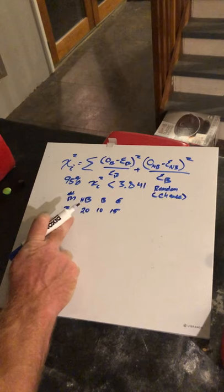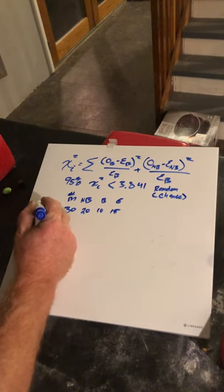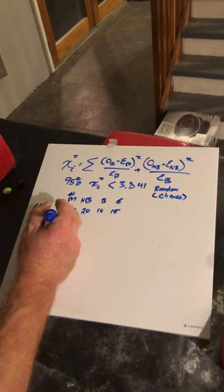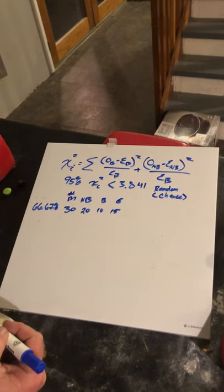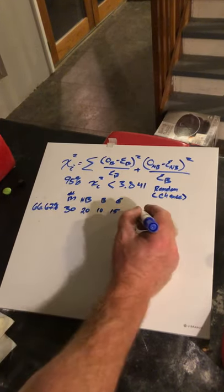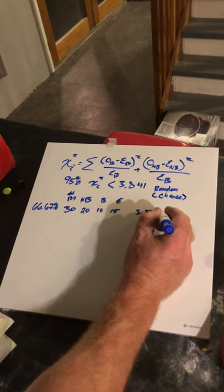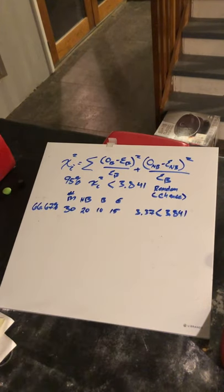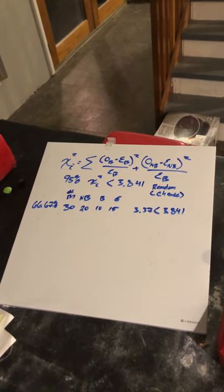Now, the note 20 out of 30 is 66.67% of the time. This ends up with a 3.37, which is less than 3.841. So, out of 30 matches, okay,